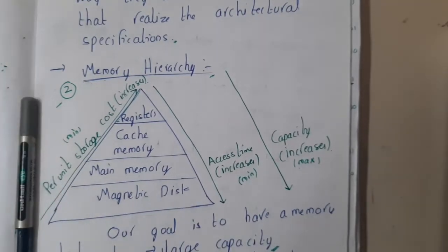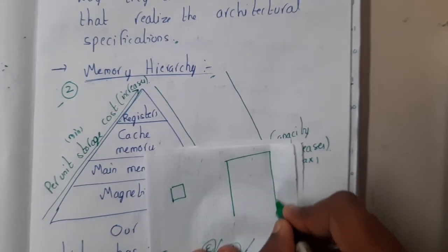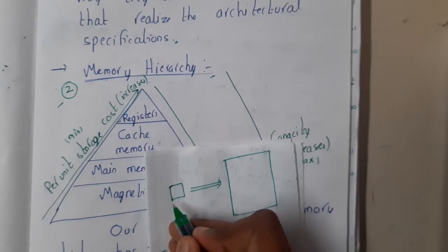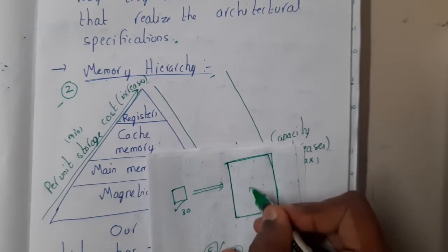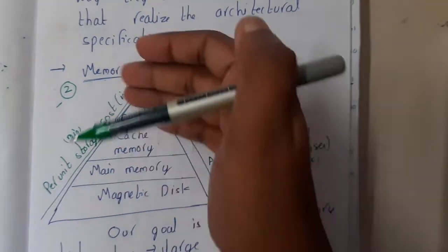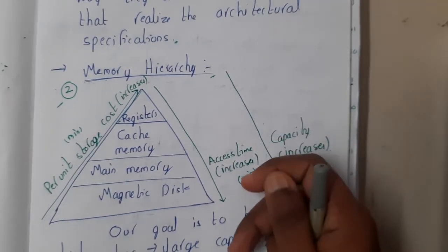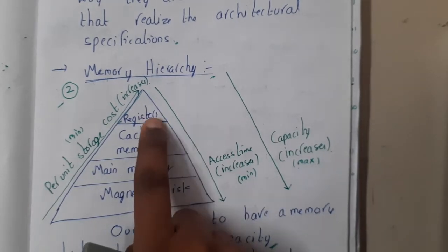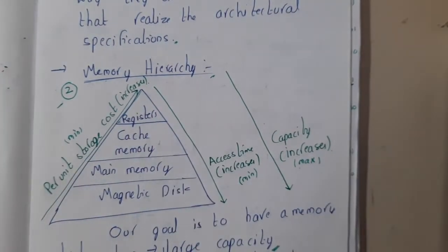Let me give you an analogy. Assume this small piece of paper is your house and this bigger piece is your friend's house. If I want to search for a particular item in the small house, it might take 30 minutes. But in the big house, it might take even days because it is very large. That is the reason why as memory size increases, the access time also increases.